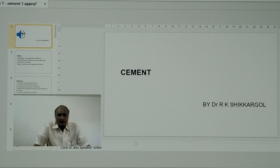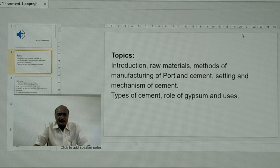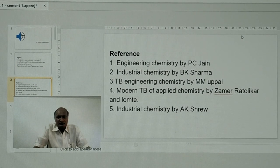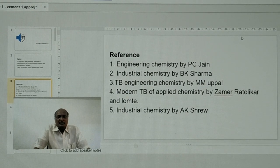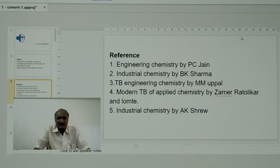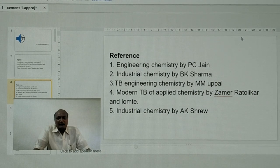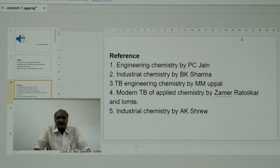For this chapter, we have referred some important books such as Engineering Chemistry by P.C. Jain, Industrial Chemistry by B.K. Sharma, Textbook of Engineering Chemistry by M.M. Uppal, Modern Textbook of Applied Chemistry by Jamre, Rotoliker and Lomte, and one foreign author — Industrial Chemistry by A.K. Srim.